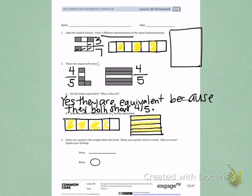Number 3. Diana ran a quarter mile straight down the street. Becky ran a quarter mile on a track. Who ran more? Explain your thinking.